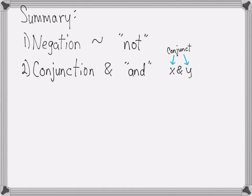In a conjunction, x and y, we call each of the variables conjuncts. x is a conjunct and y is a conjunct. It doesn't matter which one's first.